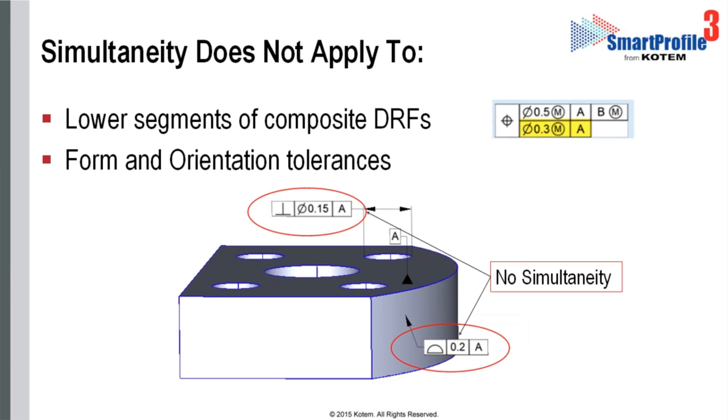Simultaneity does not apply in the following two cases. The first case refers to the lower segments of feature control frames. If we have several FCFs with identical tolerance types, datums, and datum modifiers, then simultaneity applies only to the uppermost segment.